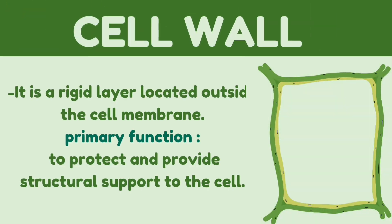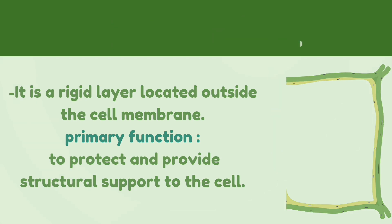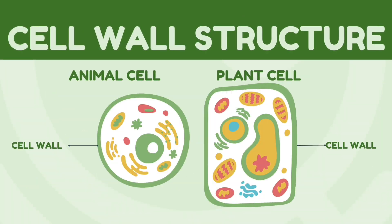Starting off with the cell wall: the cell wall is a rigid layer located outside the cell membrane, and its primary function is to protect and provide structural support to the cell. Animal cells have a round structure, whereas plant cells are rectangular in shape. This is due to the cell wall's existence, which gives the cell its shape and structure.